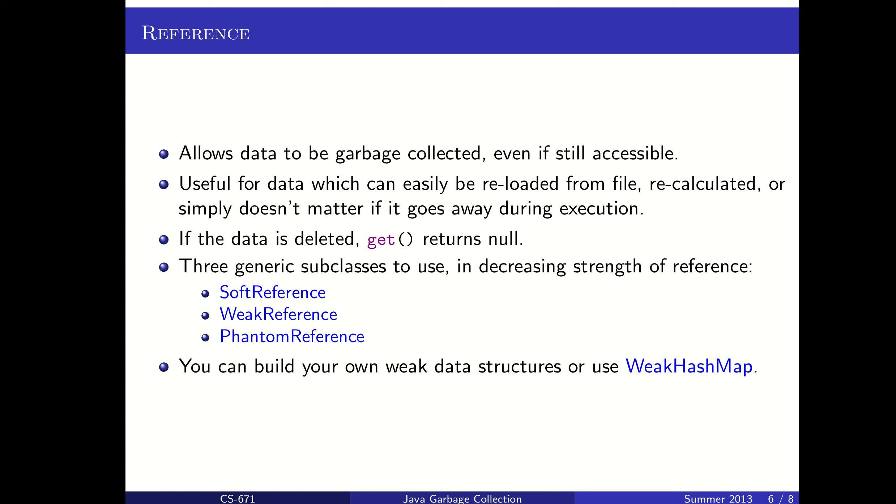This is also useful for data which you could easily reload from a file and you don't care about the performance hit from that but you want to make sure that your memory is still flexible and able to be allocated for other things or stuff that you could recalculate or, again, if it just doesn't matter if it goes away during execution. If the data is deleted and you call get on that reference then it will return null. So these are just sort of wrapper classes that allow us to sort of have a variable that points to something but doesn't point to it in a way that causes the garbage collector to keep that thing in memory forever.